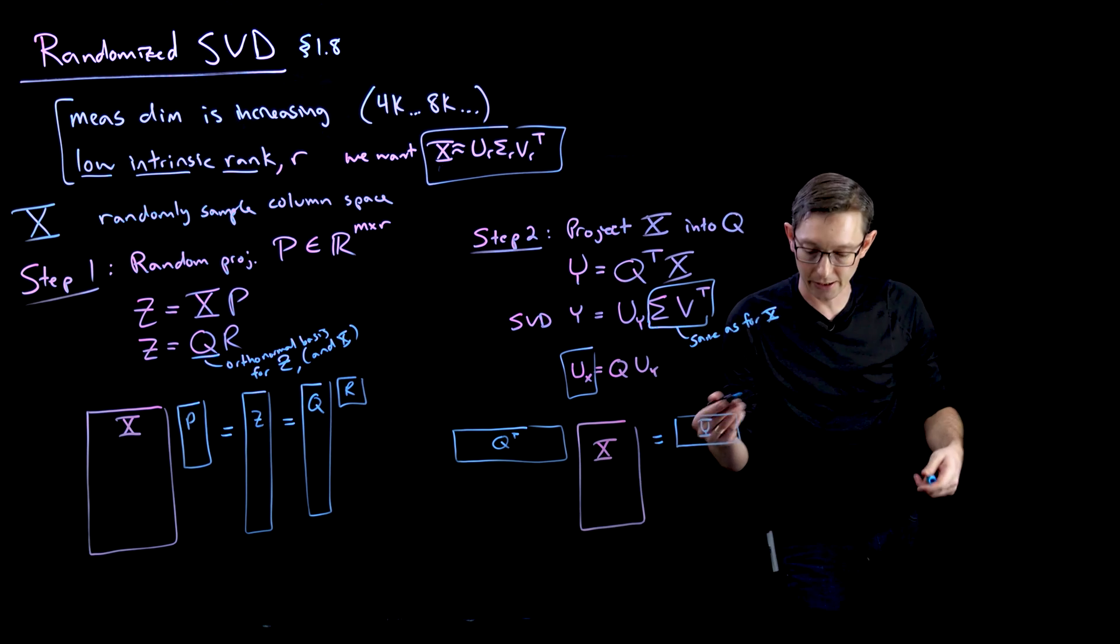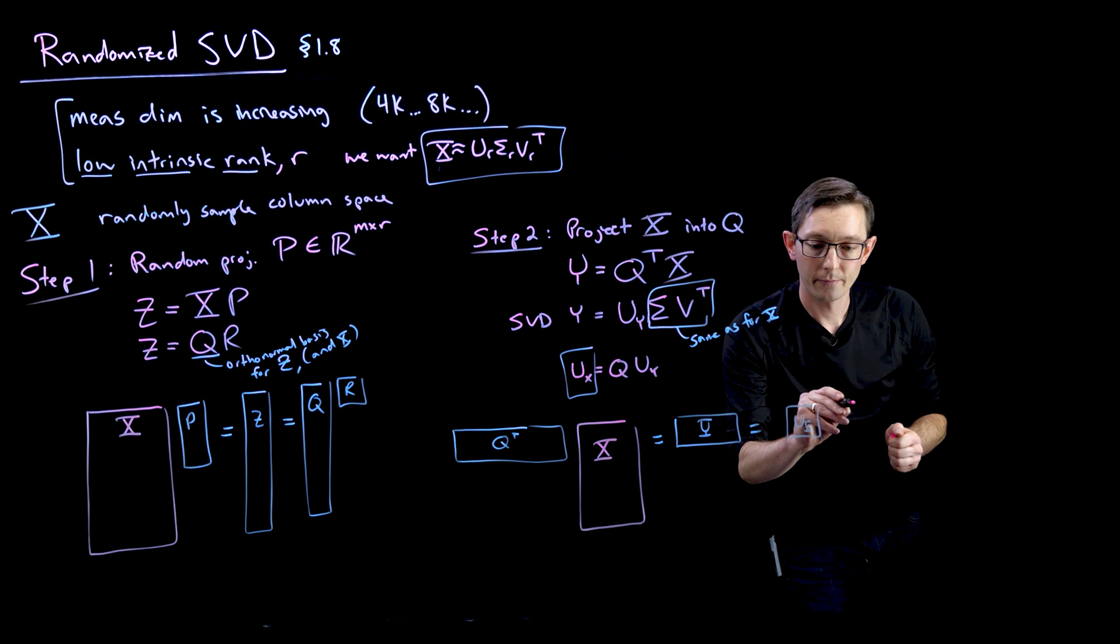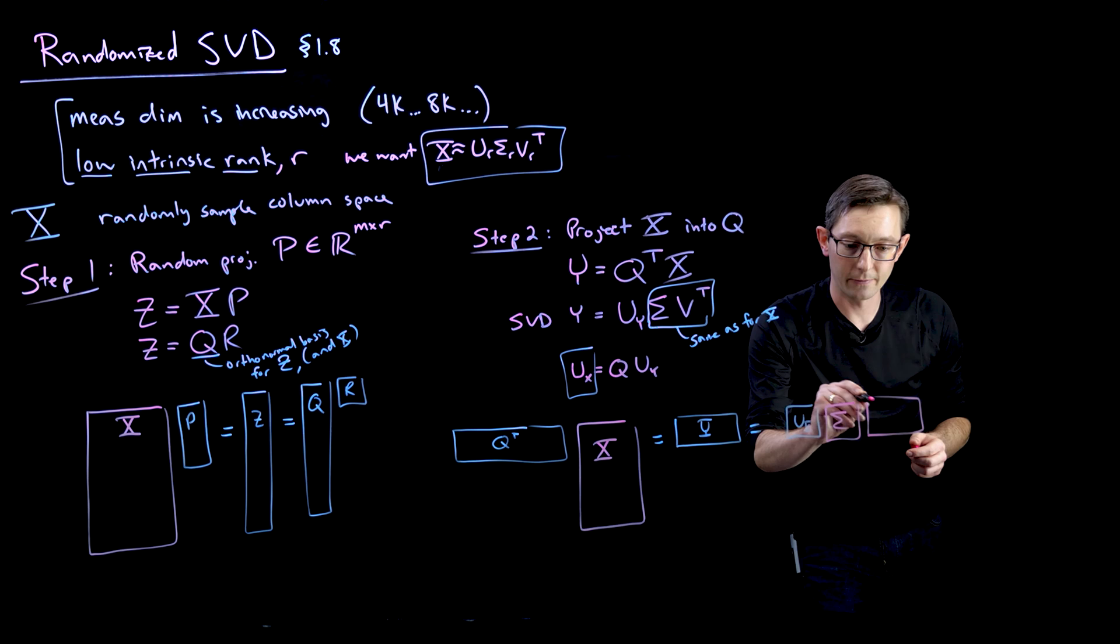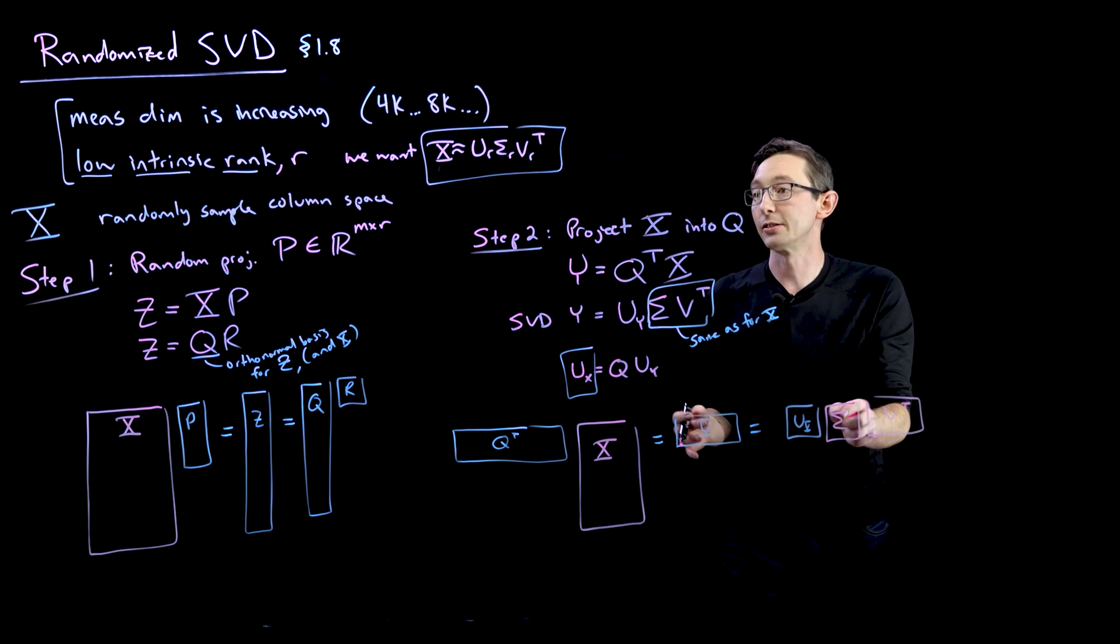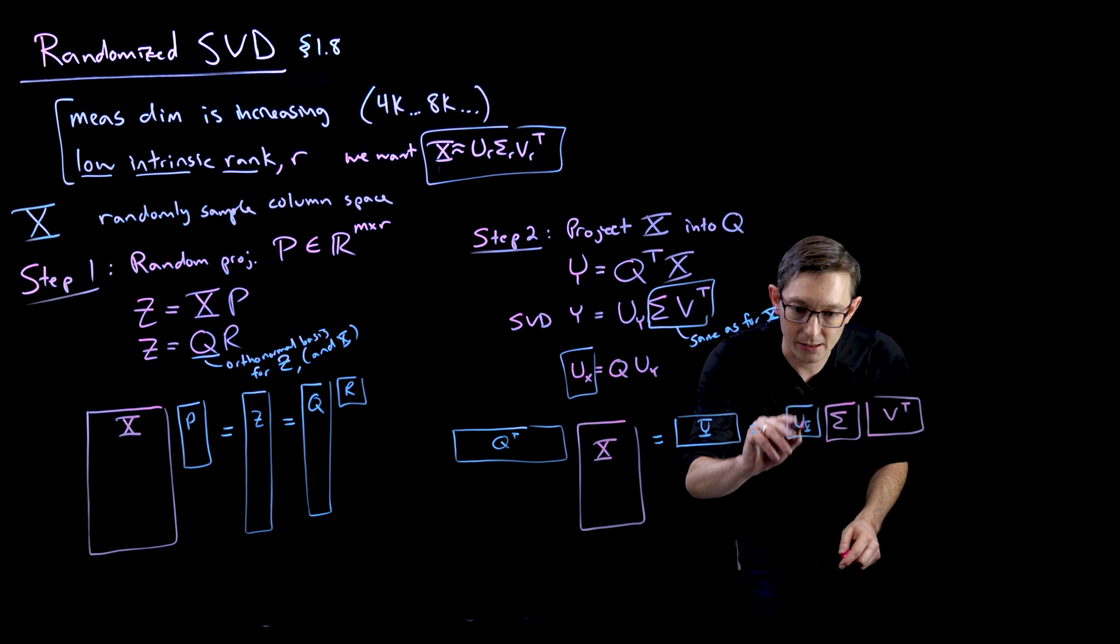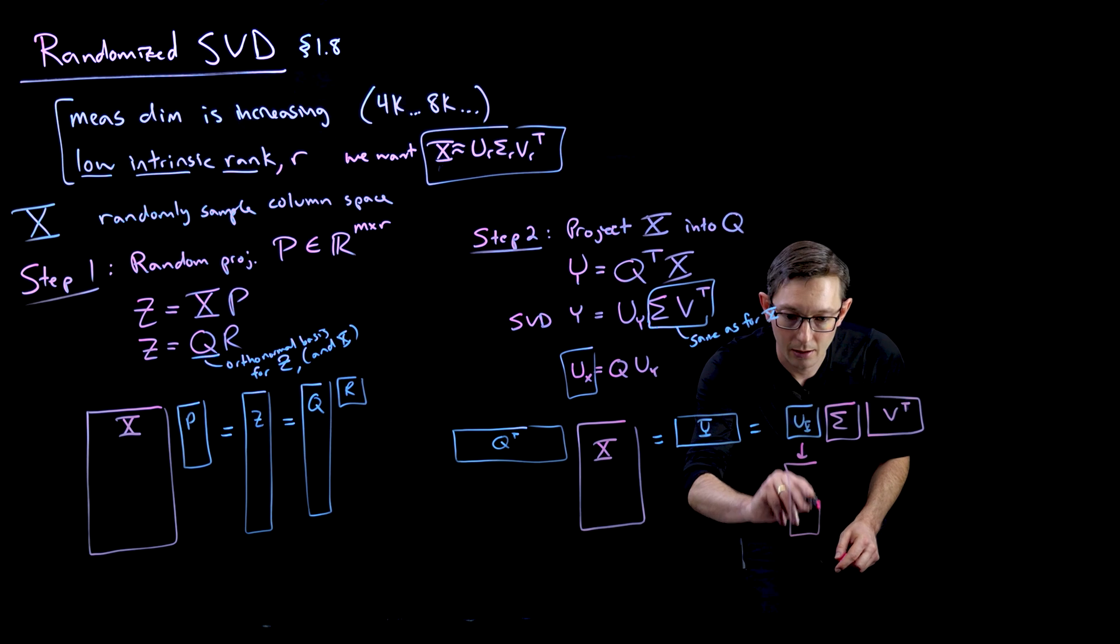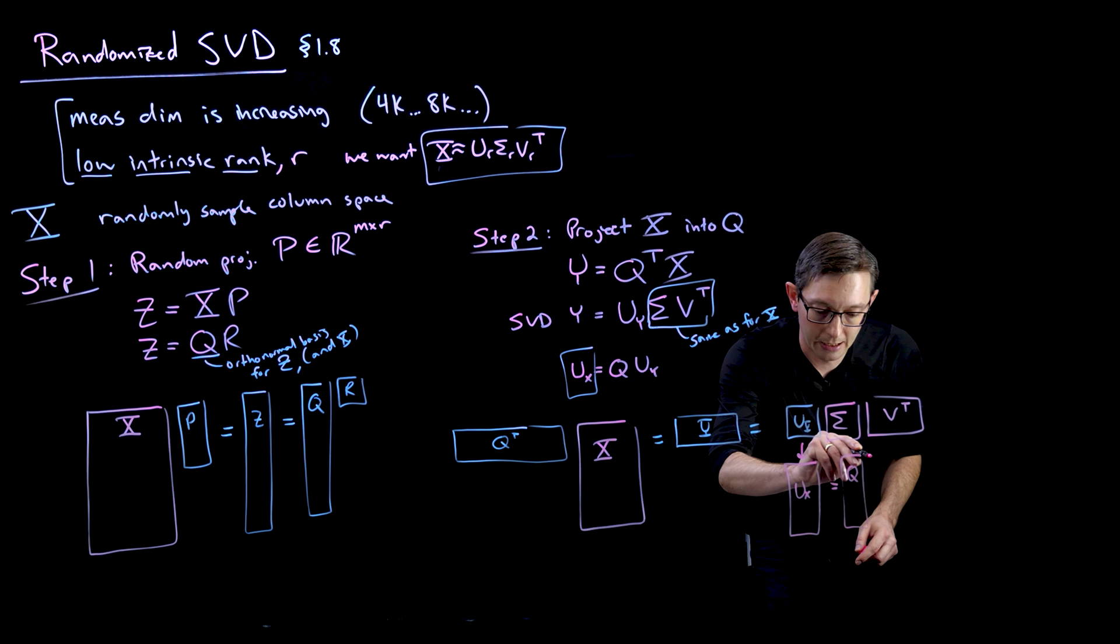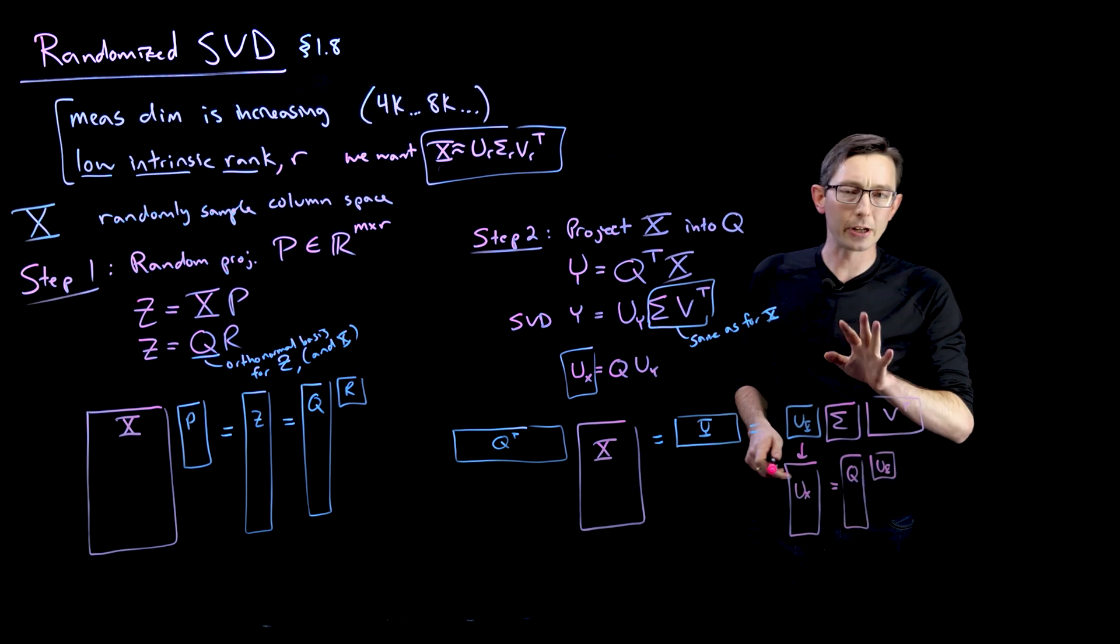That gives me a Y matrix, which is a lot smaller. So it's size R by M. This is my Y matrix. I can compute its singular value decomposition, and I get U_Y times sigma_Y times V_Y transpose. These are the vectors I actually want. And then from this U_Y, I can compute U_X, which is equal to Q times U_Y. So this is pretty cool.